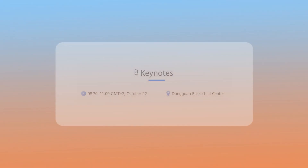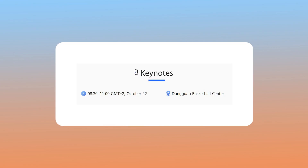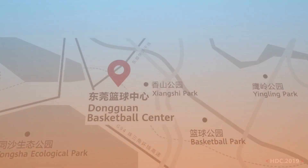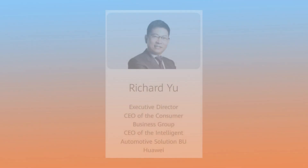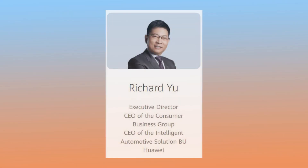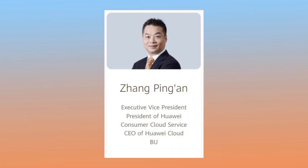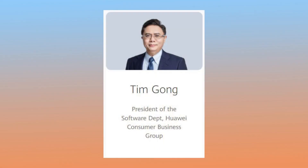So, let's move to HDC 2021 schedule. Timeline: 8:30 to 11 GMT+2, October 22, at Dongguan Basketball Center, China. Keynote speakers: Richard Hu, Wang Chenglu, Zhang Ping-Piang, Tim Gong, and Kelvin Hu.